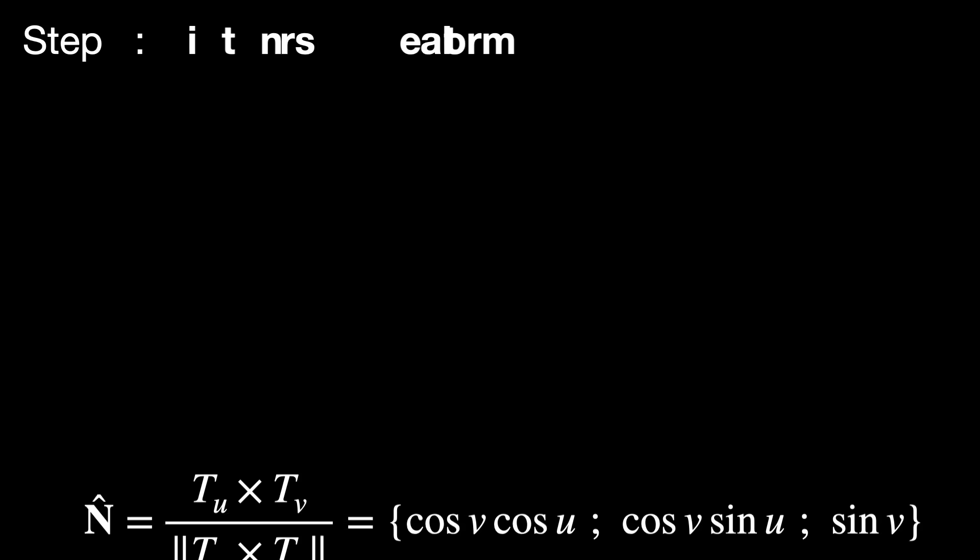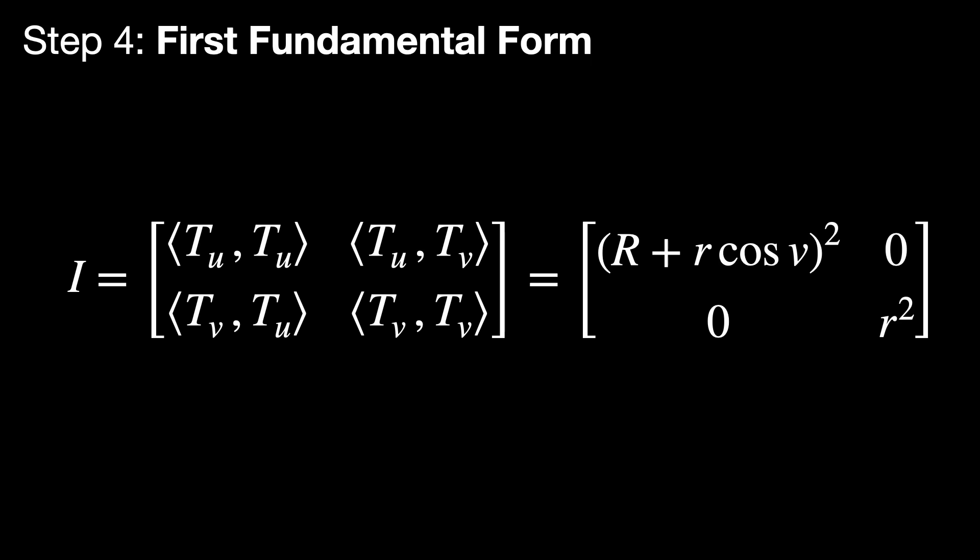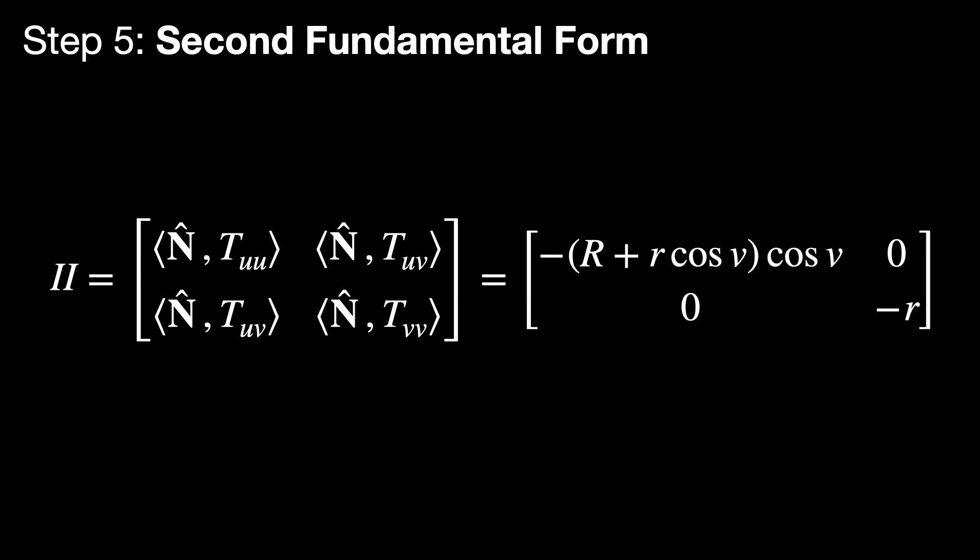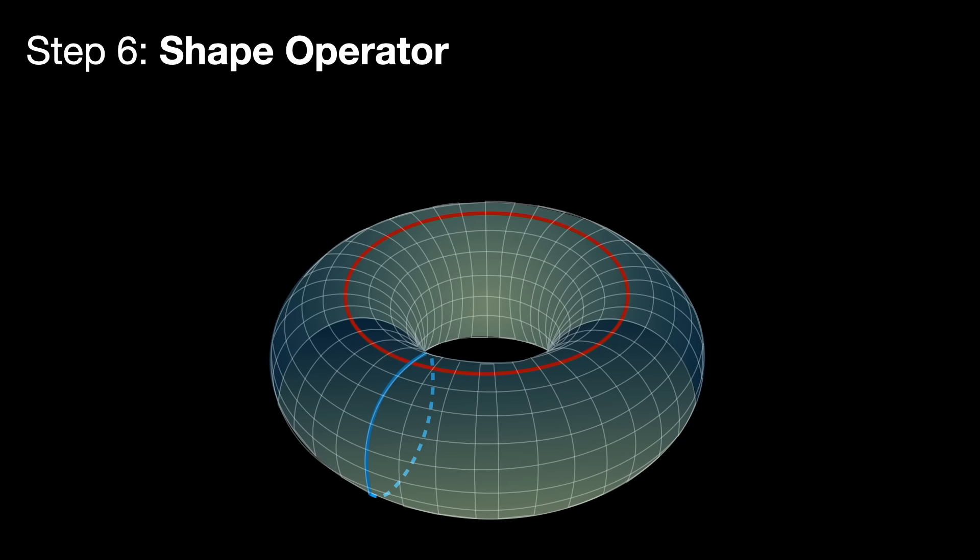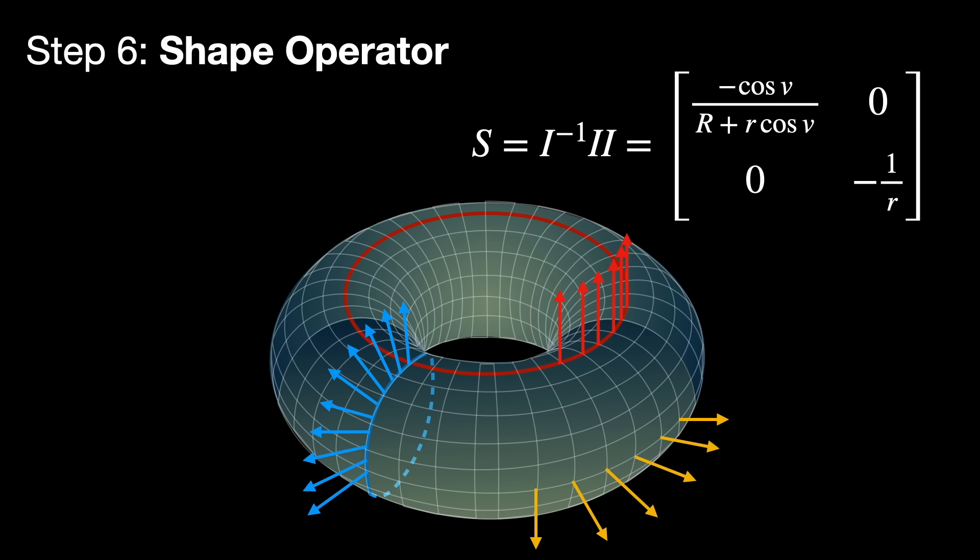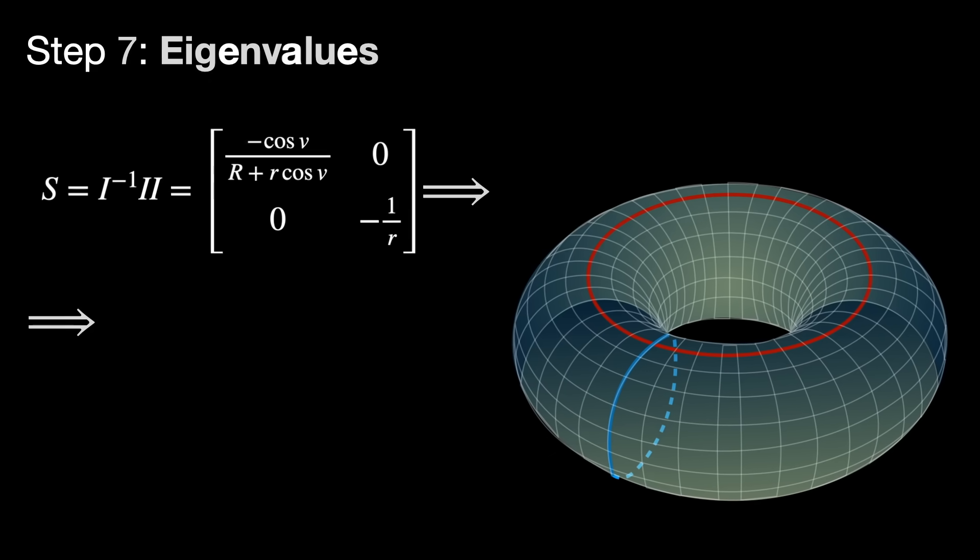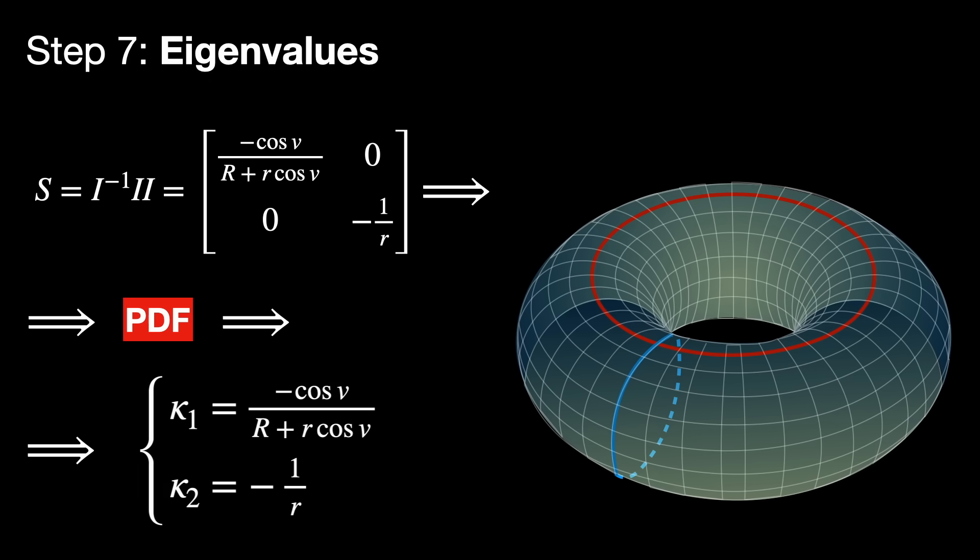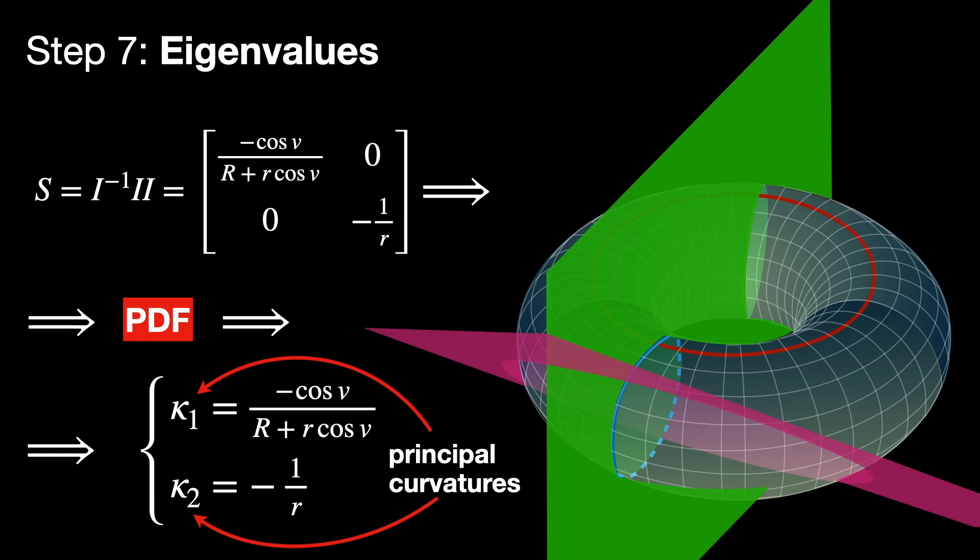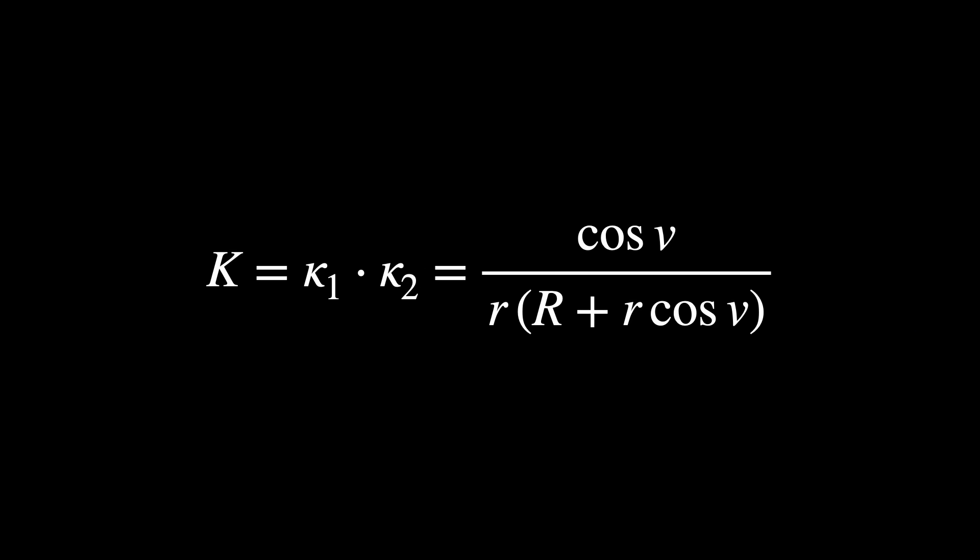Step 4. The first fundamental form. Step 5. The second fundamental form. Step 6. The shape operator. Step 7. The eigenvalues. Once we found the eigenvalues of the shape operator, in other words, the principal curvatures kappa1 and kappa2, we can calculate the Gaussian curvature for each point of the two torus.